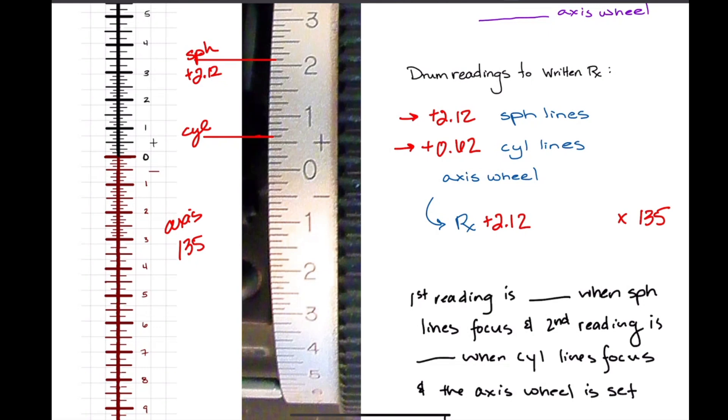And then how far did we go from 2.12 to 0.62? I think you could just subtract it if you want to put them in your calculator: minus 2.12 minus 0.62. And what do you have? About 1.50. Plus 1.50.